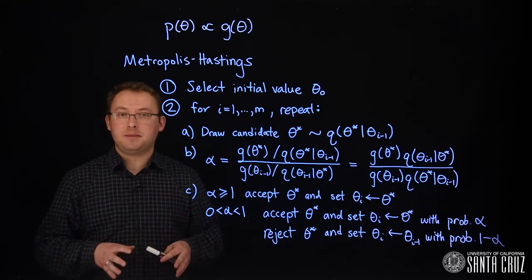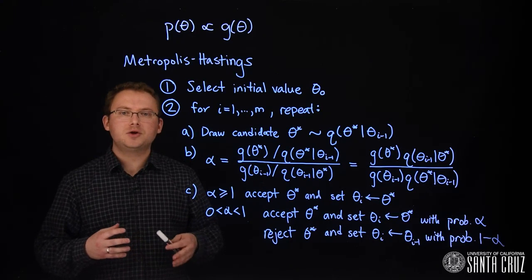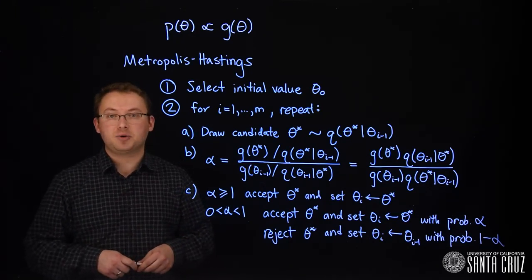Ideally, a random walk sampler should accept somewhere between 23 and 50% of the candidates proposed.